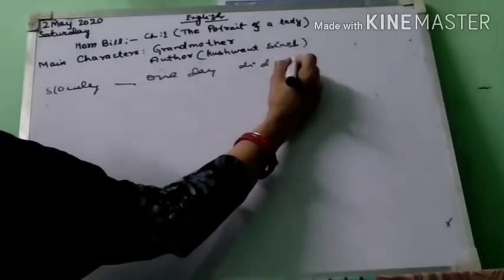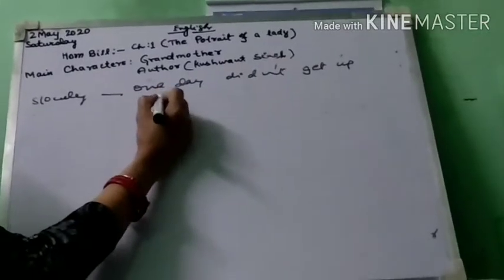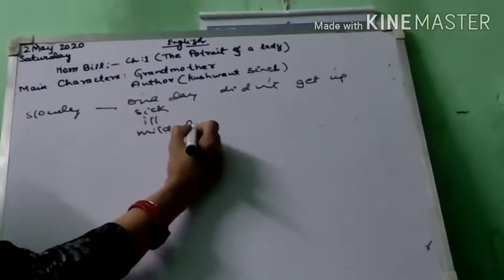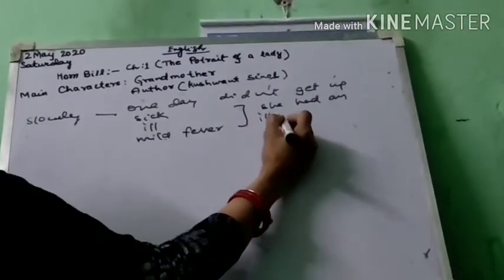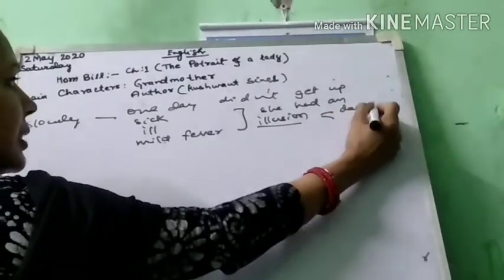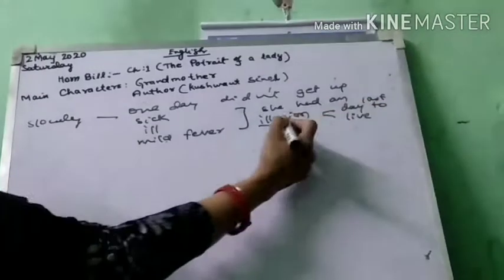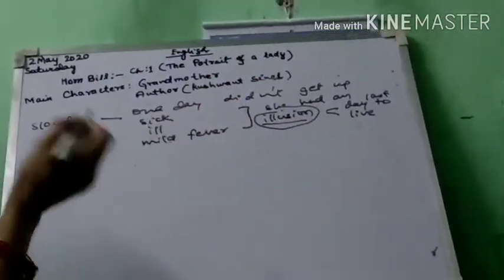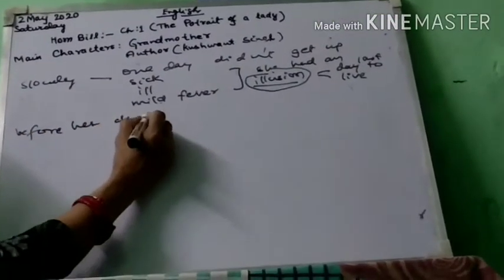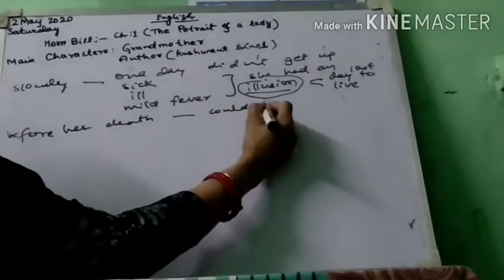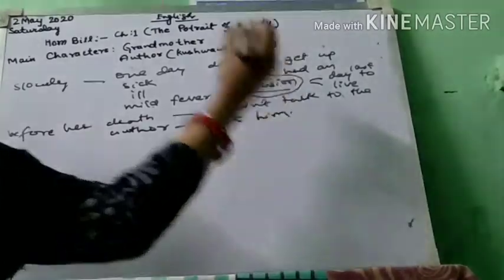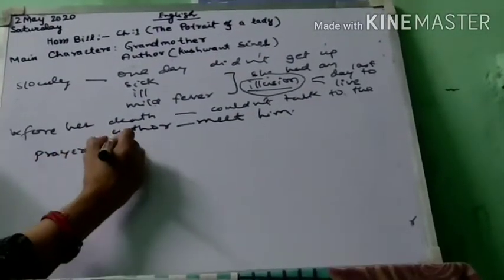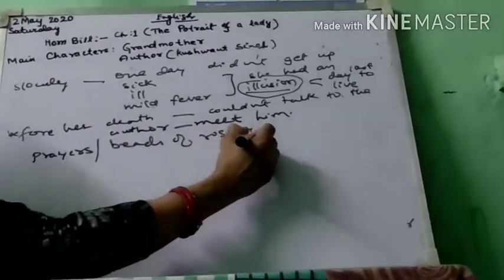Slowly, as the days passed, one day the grandmother did not get up and was feeling sick — she was really ill and suffering from mild fever. These things showed that she had a feeling, an illusion, that she was going to die and it was her last day to live. Before her death, she couldn't talk to the author or meet him. But her prayers, her beads of rosary, and other devotional practices were continued.